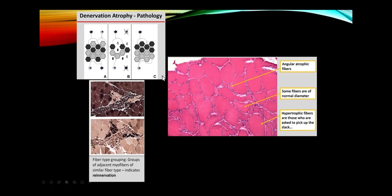In de-innervation on biopsy, groups of adjacent myofibers are of a similar type — a neurogenic pattern. Some fibers become hypertrophic, some become angular, and some are normal.